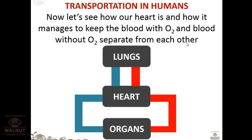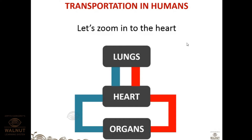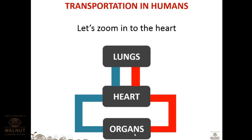Now let's see how the heart manages to keep oxygenated and deoxygenated blood separate. The heart transports oxygenated blood to the organs via blood vessels. Once organs utilize that blood, they release CO2 as waste. The blood carrying CO2 returns to the heart, which then sends that deoxygenated blood to the lungs again for purification.